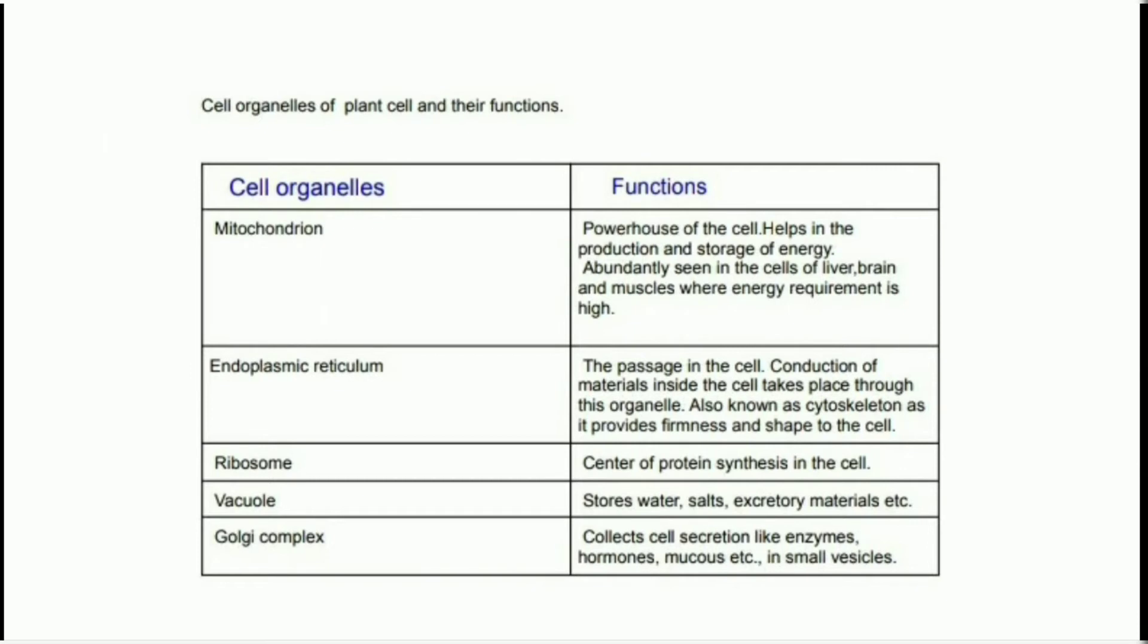Cell organelles of plant cell and their functions. The first cell organelle is mitochondrion. Its function is powerhouse of the cell. Helps in the production and storage of energy. Abundantly seen in the cells of liver, brain and muscles where energy requirement is high.